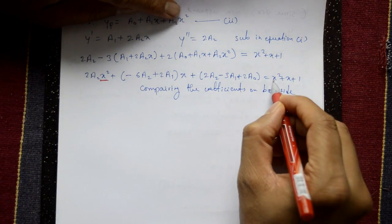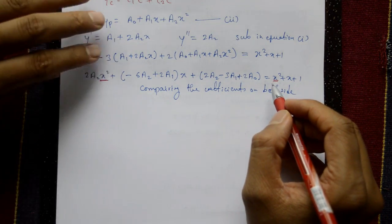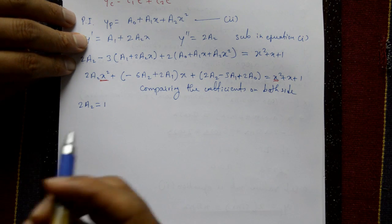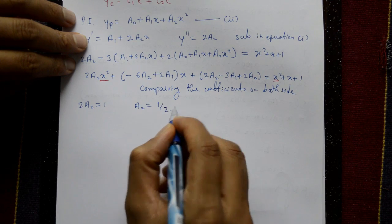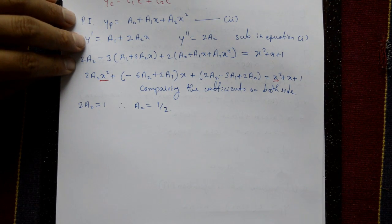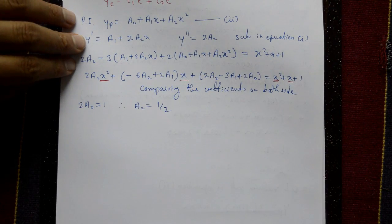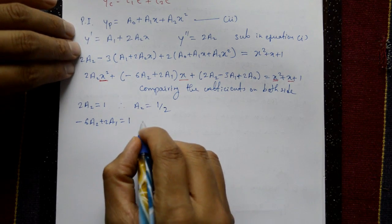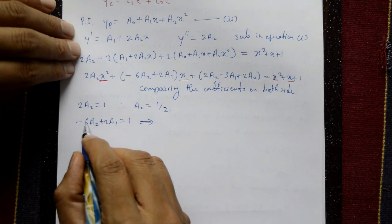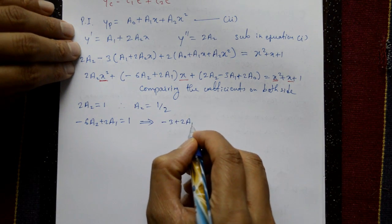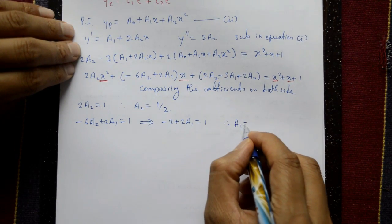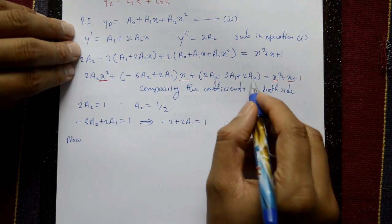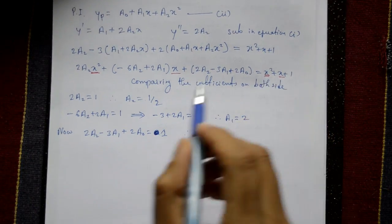Comparing coefficients of x²: 2a₂ = 1, so a₂ = 1/2. Comparing coefficients of x: -6a₂ + 2a₁ = 1. Substituting a₂ = 1/2 gives -3 + 2a₁ = 1, therefore a₁ = 2.